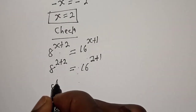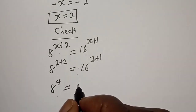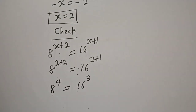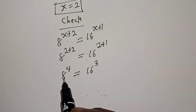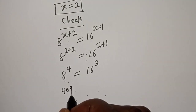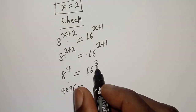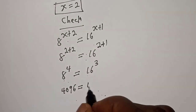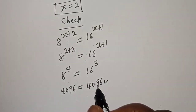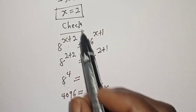That gives us 8 raised to power 4 is equal to 16 raised to power 3. 8 raised to power 4 is equal to 4096, which is equal to 16 raised to power 3, which is also 4096. This satisfies the given equation at s is equal to 2.